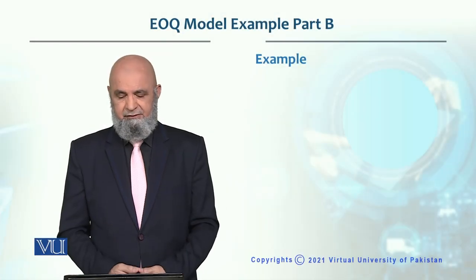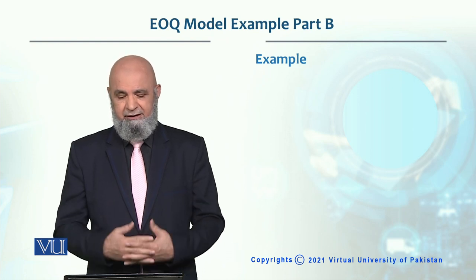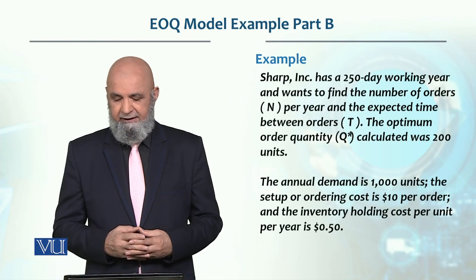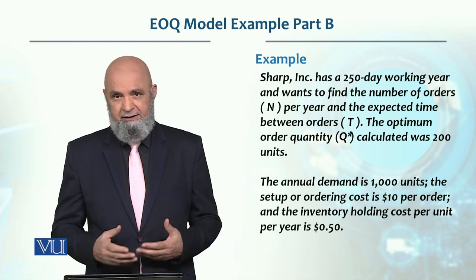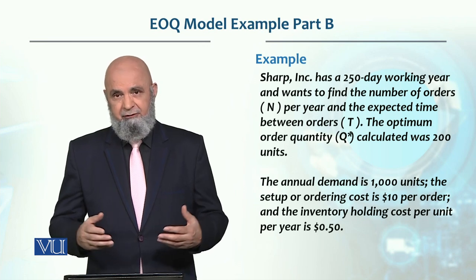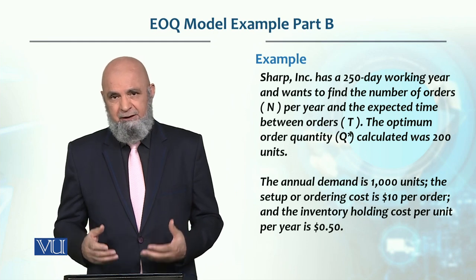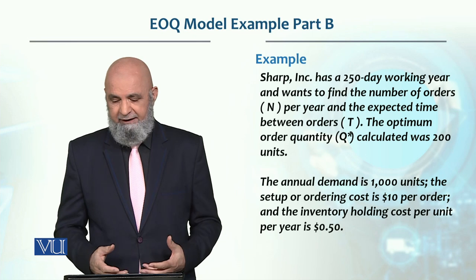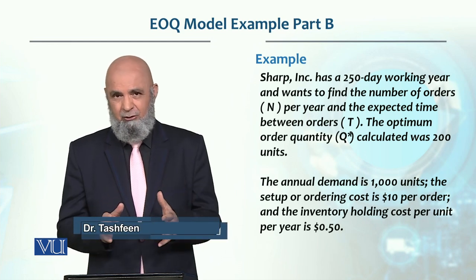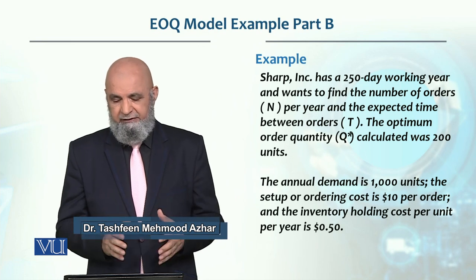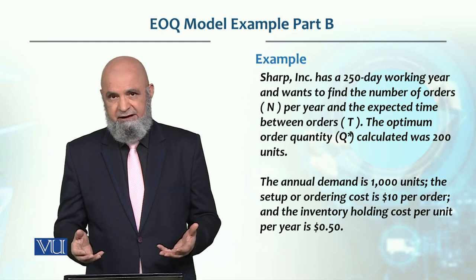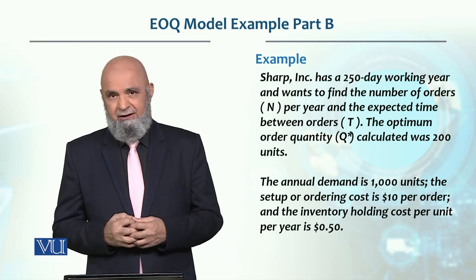Let's look at some other values which we have determined and calculated based on the EOQ model. The annual demand is 1000 units per year, ordering cost is $10 per order, and inventory holding cost is $10.5 per unit per year. We have to find how many orders to place and the time between orders, denoted as T. The optimum order quantity, as calculated in the EOQ model, is 200 units.